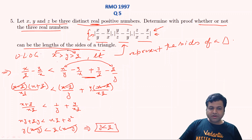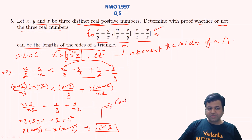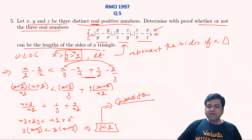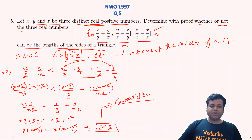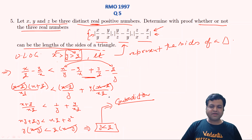But we had assumed y > z. So here comes a contradiction. Since this is a contradicting statement, we can say that these three cannot represent the sides of a triangle.